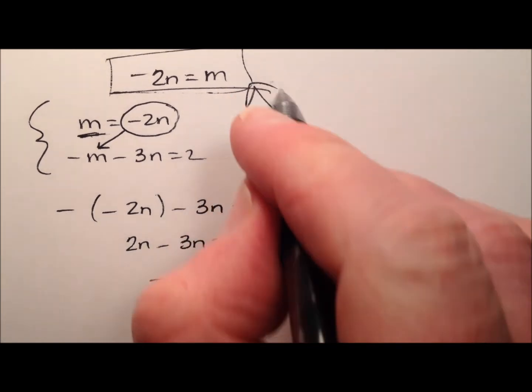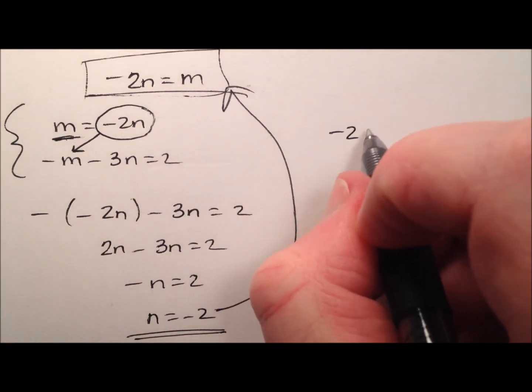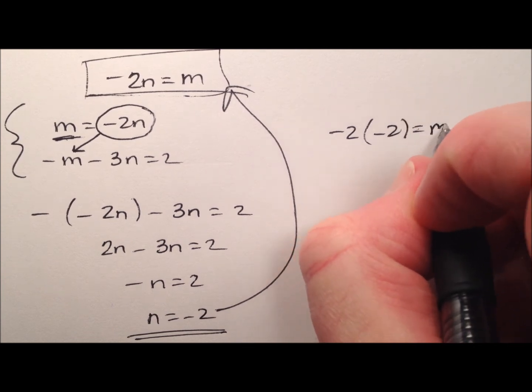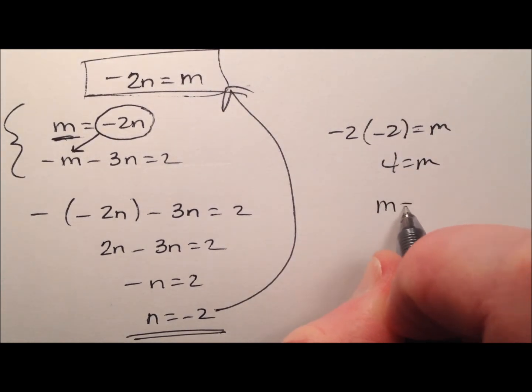Well, that's great. Let's go ahead and plug it back in right there. And that means that if n is negative 2, then m will be 4.